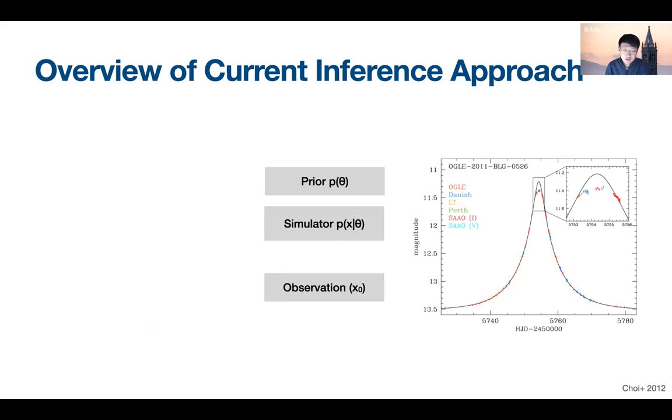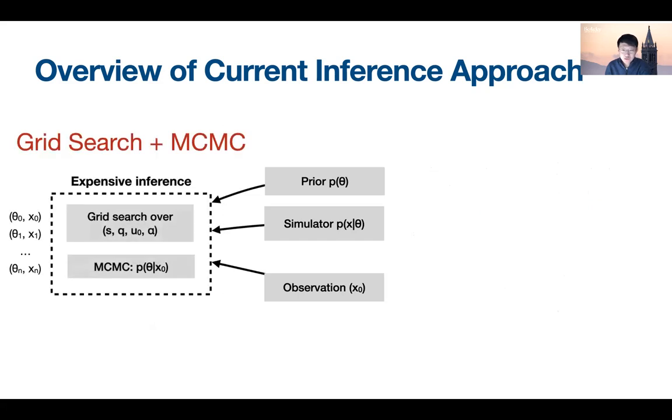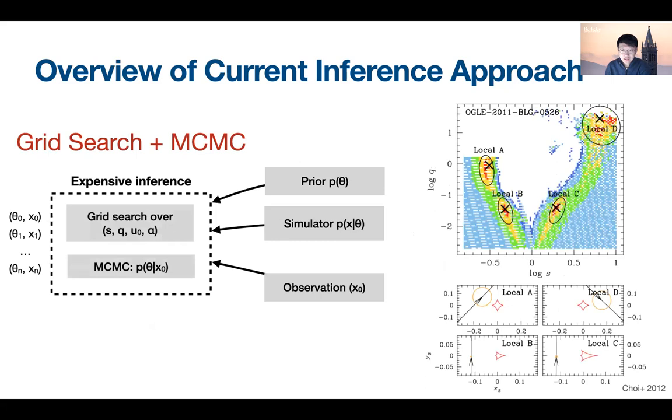Instead, what people usually do is they first try to find approximate solutions with a grid search over two binary lens parameters, binary separation and mass ratio, just as you see to the right, which is color coded by the log likelihood. In this case, four degenerate solutions are found. And from these approximate solutions, one will be able to run MCMC to first refine the solutions, then acquire the posteriors, and finally find the best fit model.